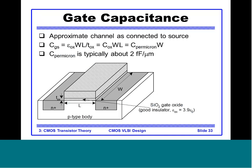The gate capacitance CGS = ε_ox · W · L / T_ox = C_ox · W · L. We can define capacitance per micron, which is typically about 2 fF/μm. This may not be accurate for very modern sub-micron devices, but the key point is that the gate capacitance is very important since it is the one that causes charge to build up in the channel.